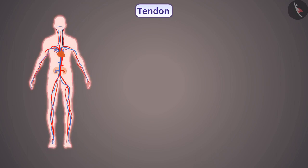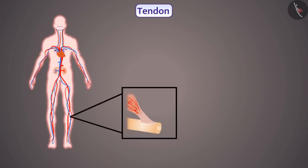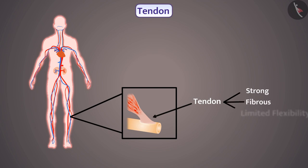The bones and muscles are connected with each other by tendons. Therefore the tendon is also a connective tissue. It is a strong, fibrous tissue with limited flexibility.